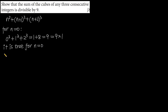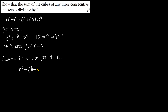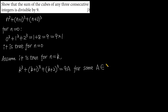Now assume it is true for n equals t. So we have t³ + (t+1)³ + (t+2)³ = 9a, where a belongs to the integers.